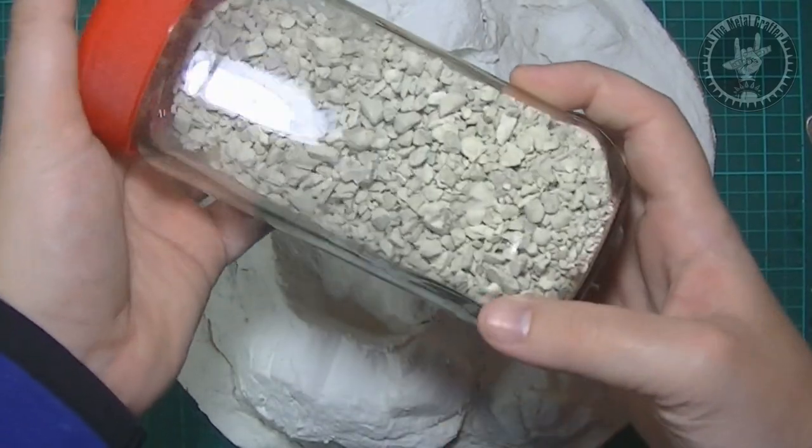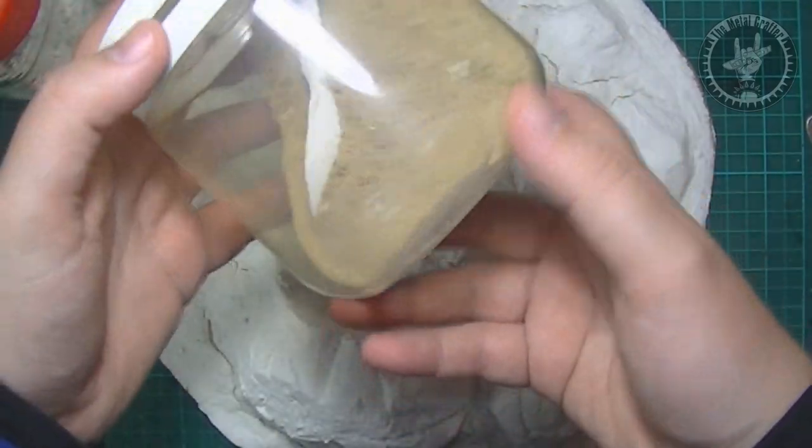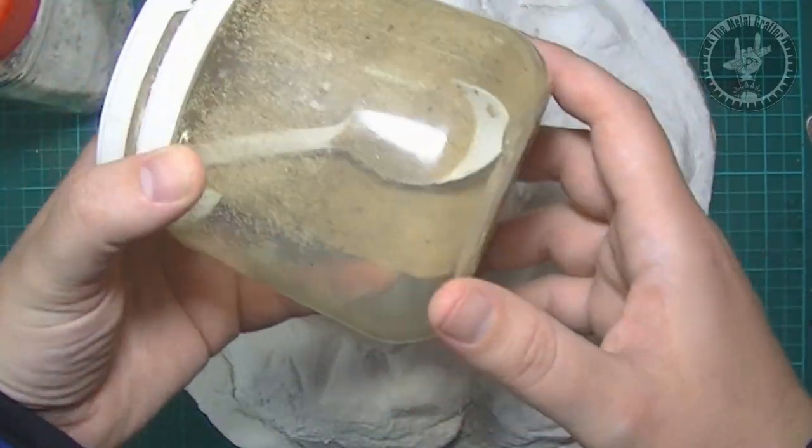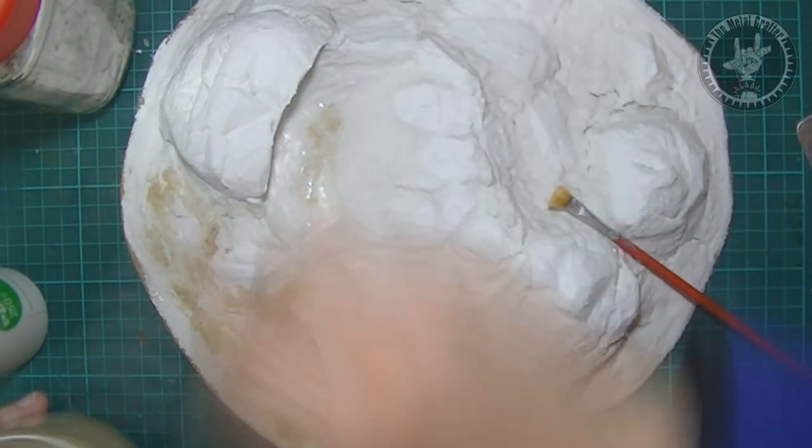Used some cut litter and regular sand to add further texture to the base. Then reinforced with some diluted PVA.